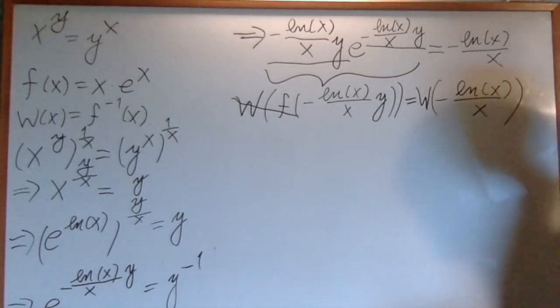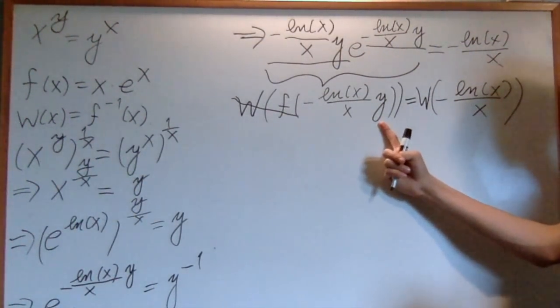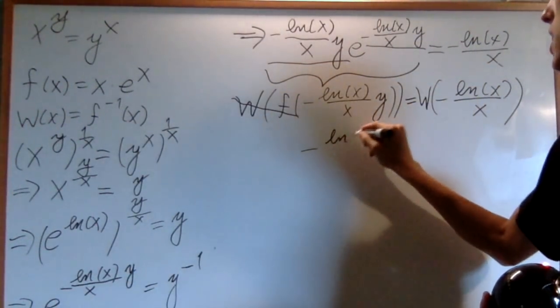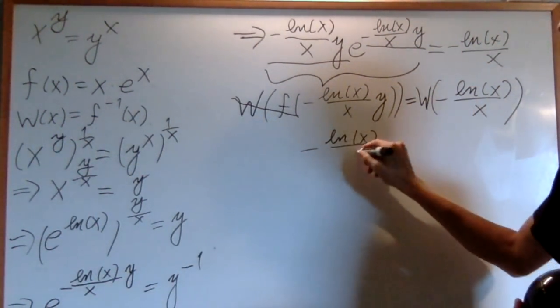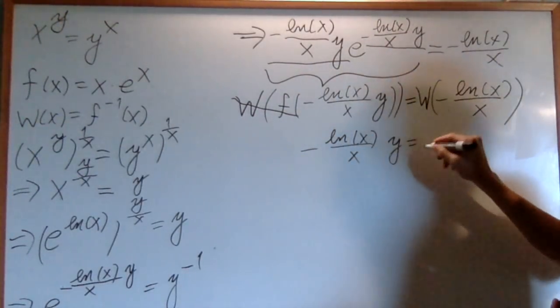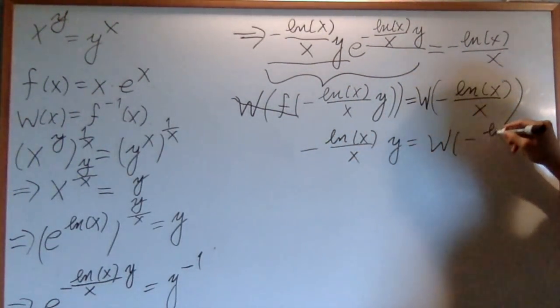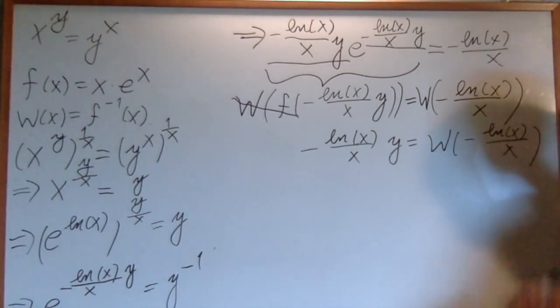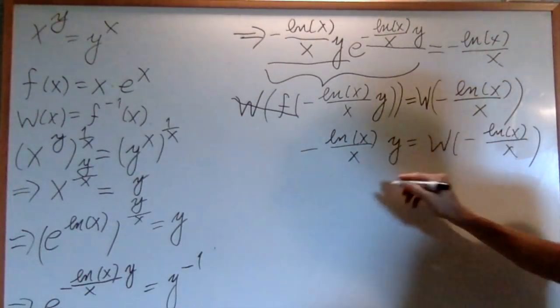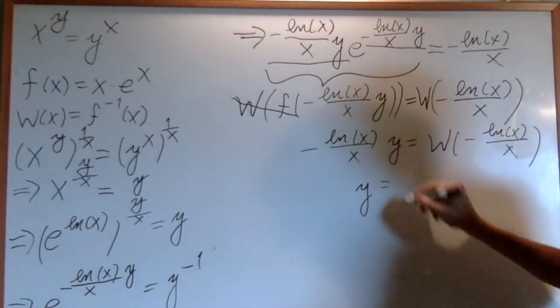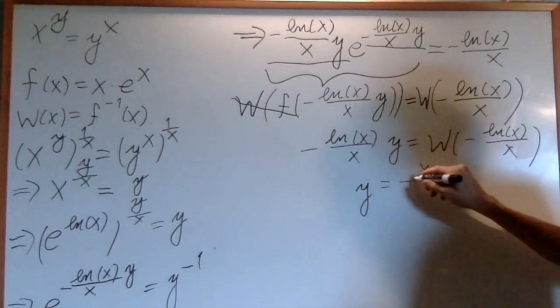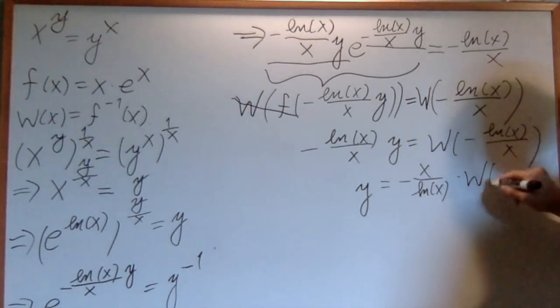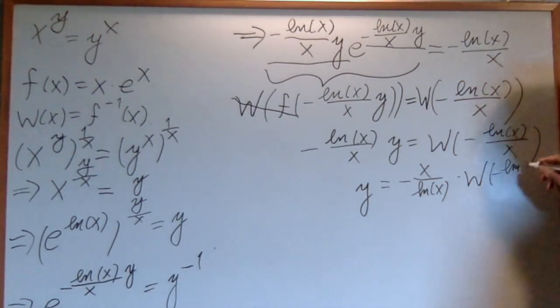And so, the only thing left to do is solve for y, which isn't very difficult, because now we have the equation negative natural log of x over x, y, equals w of negative natural log of x over x. It's very easy to solve for y. You just multiply both sides by negative x over natural log of x.